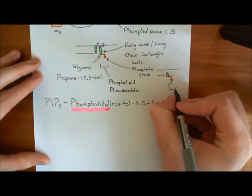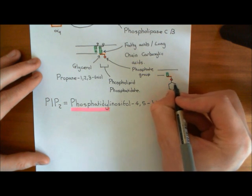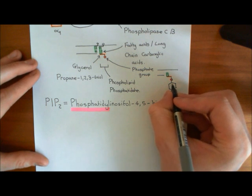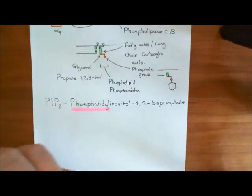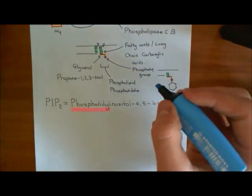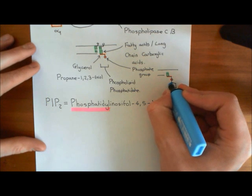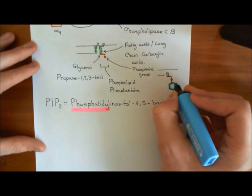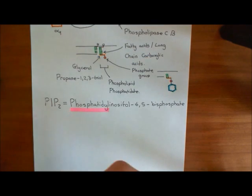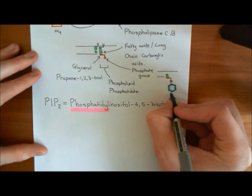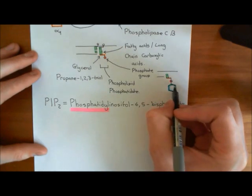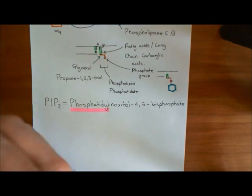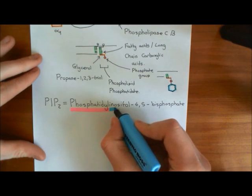Inositol is a six-membered carbon ring where each of the carbons has a hydroxyl group coming off it. I'll highlight this in blue — this is the inositol ring here in blue. All of the bonds of the six-membered ring of inositol are single bonds. That makes us phosphatidyl inositol — you've got inositol with this phosphatidyl group coming off it. I'll highlight inositol in blue there.